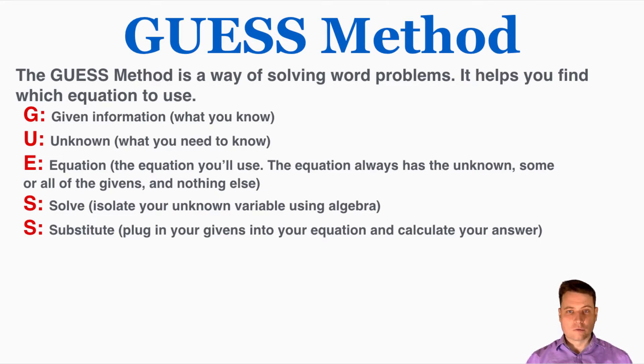Each letter in the word GUESS stands for a different step in the problem-solving method. G stands for the given information, so when you're solving a physics problem the first thing that you should do is write down all the variables that you know the values of. So set those variables equal to specific numbers from the problem.